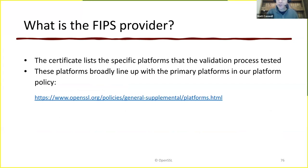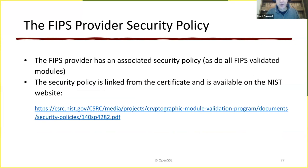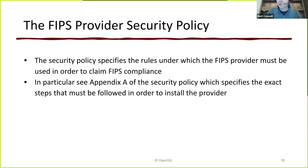The platforms we tested on are all listed and broadly line up with our primary platforms, which are listed in our platform policy. Worth noting is that one of the documents accompanying the submission for validation is a security policy — that's a requirement of doing FIPS. It's linked from the certificate itself and is available on the NIST website. It specifies the rules under which the provider must be used in order to be able to claim FIPS compliance. It's an important document, though it's quite a dry read — if you want to get to sleep at night, go read the security policy.